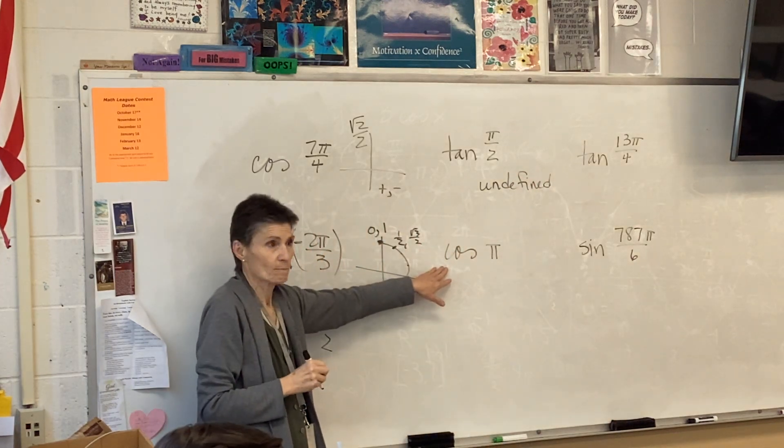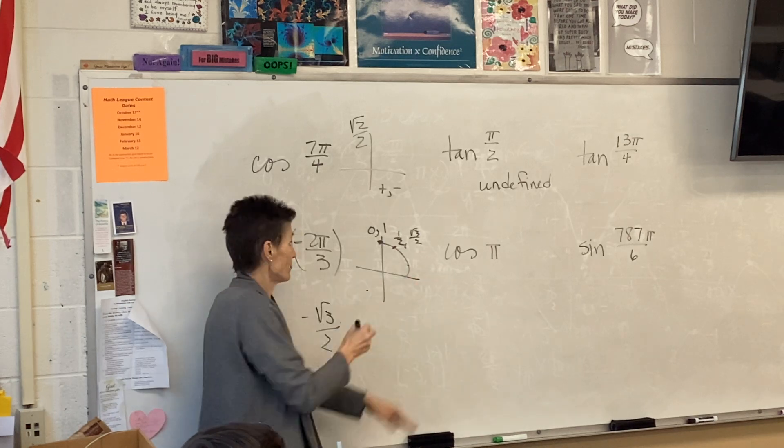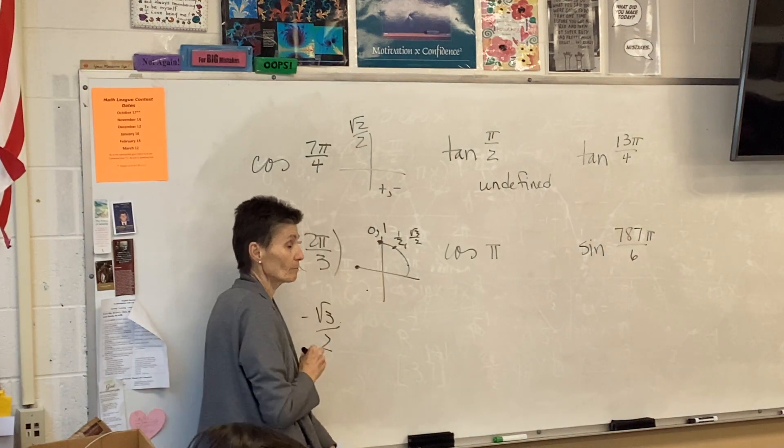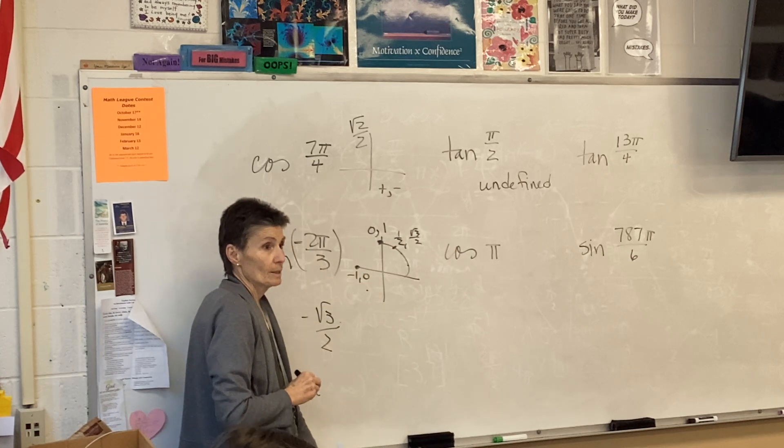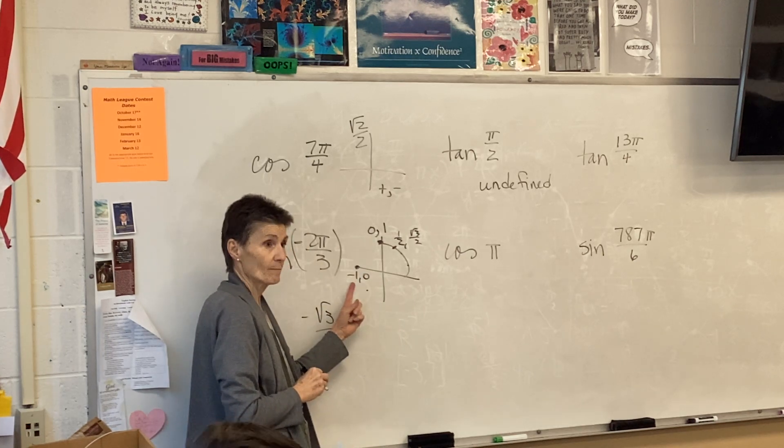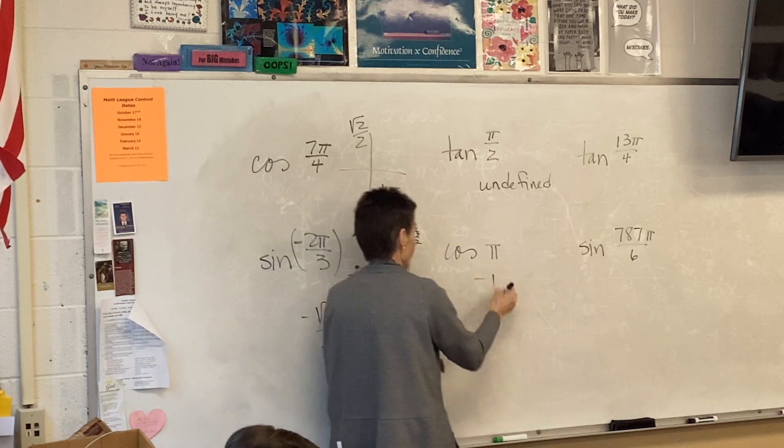There's another special special. π. That's over here. Negative 1, 0. Cosine is x. Negative 1, 0.